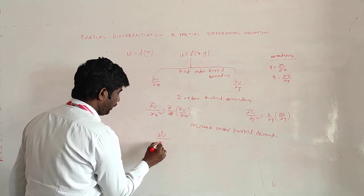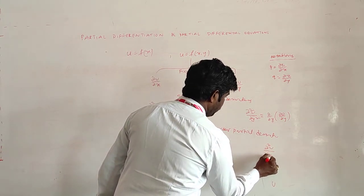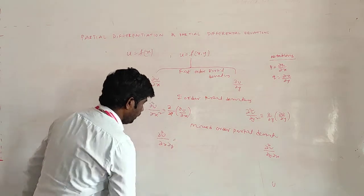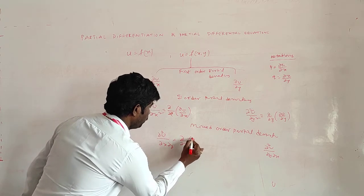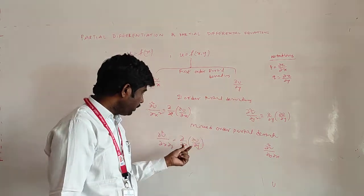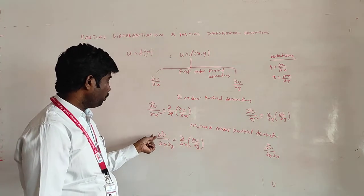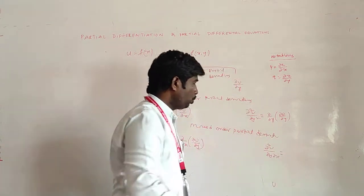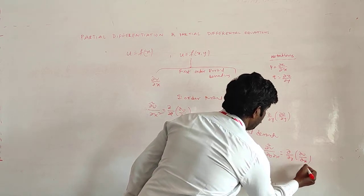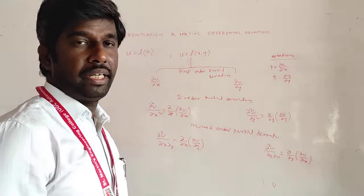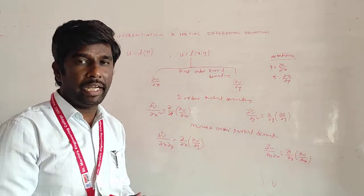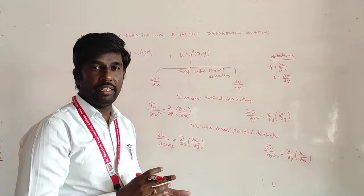The mixed partial derivatives are dou² u by dou x dou y and dou² u by dou y dou x. These are also second order partial derivatives. Here dou² u by dou x dou y means differentiating dou u by dou y with respect to x, and dou² u by dou y dou x means differentiating dou u by dou x with respect to y. Depending on the independent variables, we can also get third order, fourth order partial derivatives.